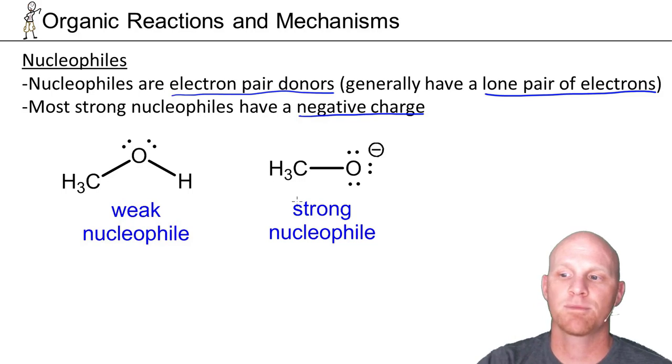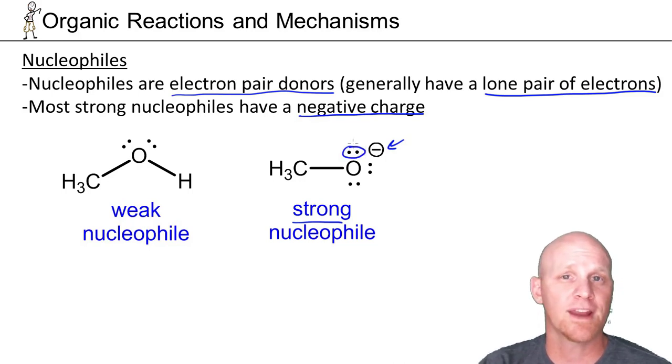If we look at the examples down below, we've got a strong nucleophile on the right here with a negative charge. We have lone pairs of electrons so we can act as a Lewis base, a nucleophile, and the negative charge makes it strong, at least stronger than when it's neutral. On the left-hand side it's a weak nucleophile. We still have a lone pair so we can act as a nucleophile, but without a negative charge, not so strong.